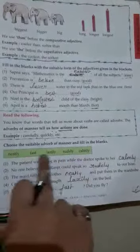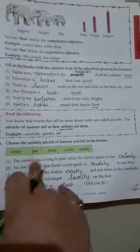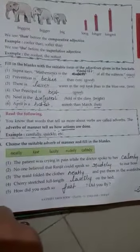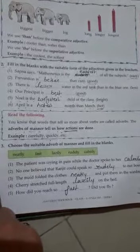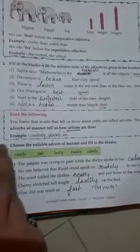First one: Here is given some adverbs of manner - neatly, fast. These tell us how actions are happening. Lazily means you are doing something lazily. Rudely means you are speaking rudely. Daily, neatly - write in a clean hand.